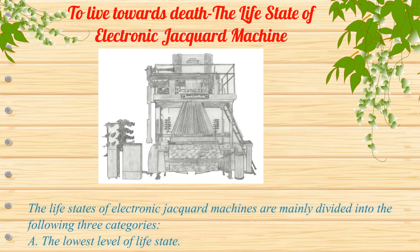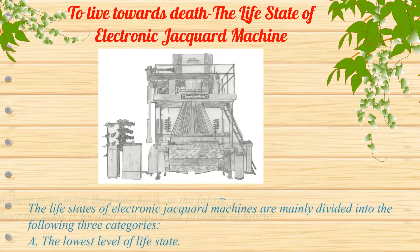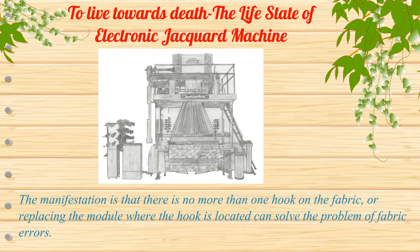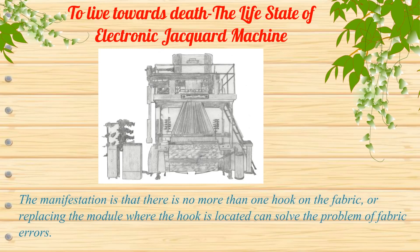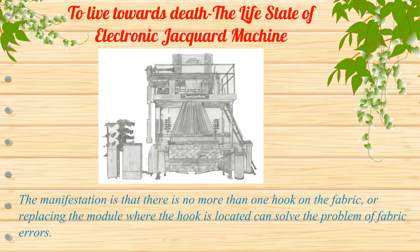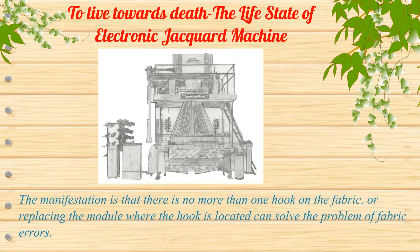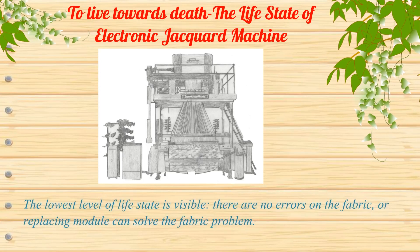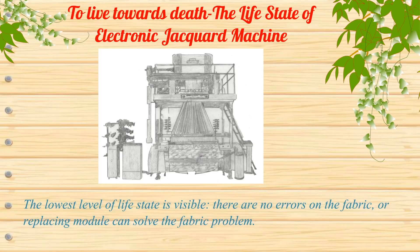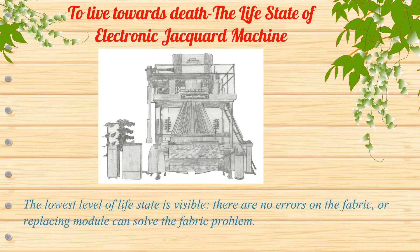A: The lowest level of life state. The manifestation is that there is no more than one hook error on the fabric, or replacing the module where the hook is located can solve the problem of fabric errors. At this lowest life state, there are no errors on the fabric, or replacing the module can solve the fabric problem.